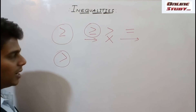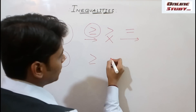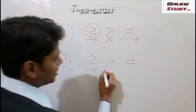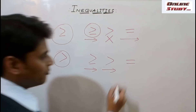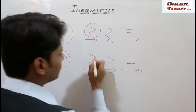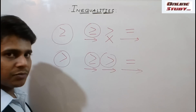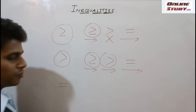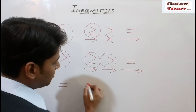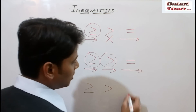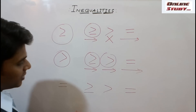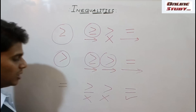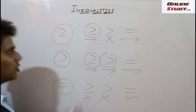Next important point: if in the conclusion you are given a greater than symbol, and in the statement you have greater than or equal to, greater than, or equal to symbols, you can travel in all of these. And the final point: if the conclusion has an equal to symbol, you can only travel in it when an equal to symbol is given in the conclusion — and the corresponding statement supports it.